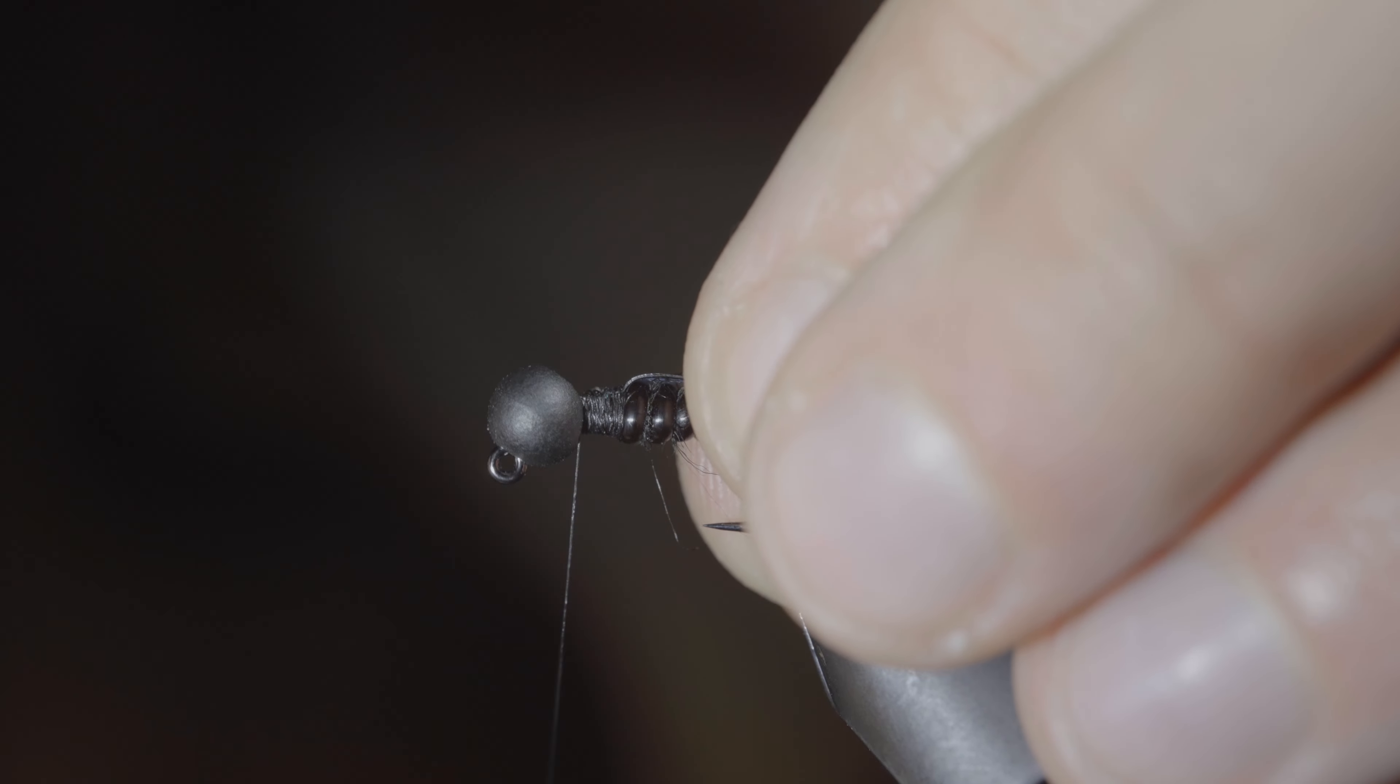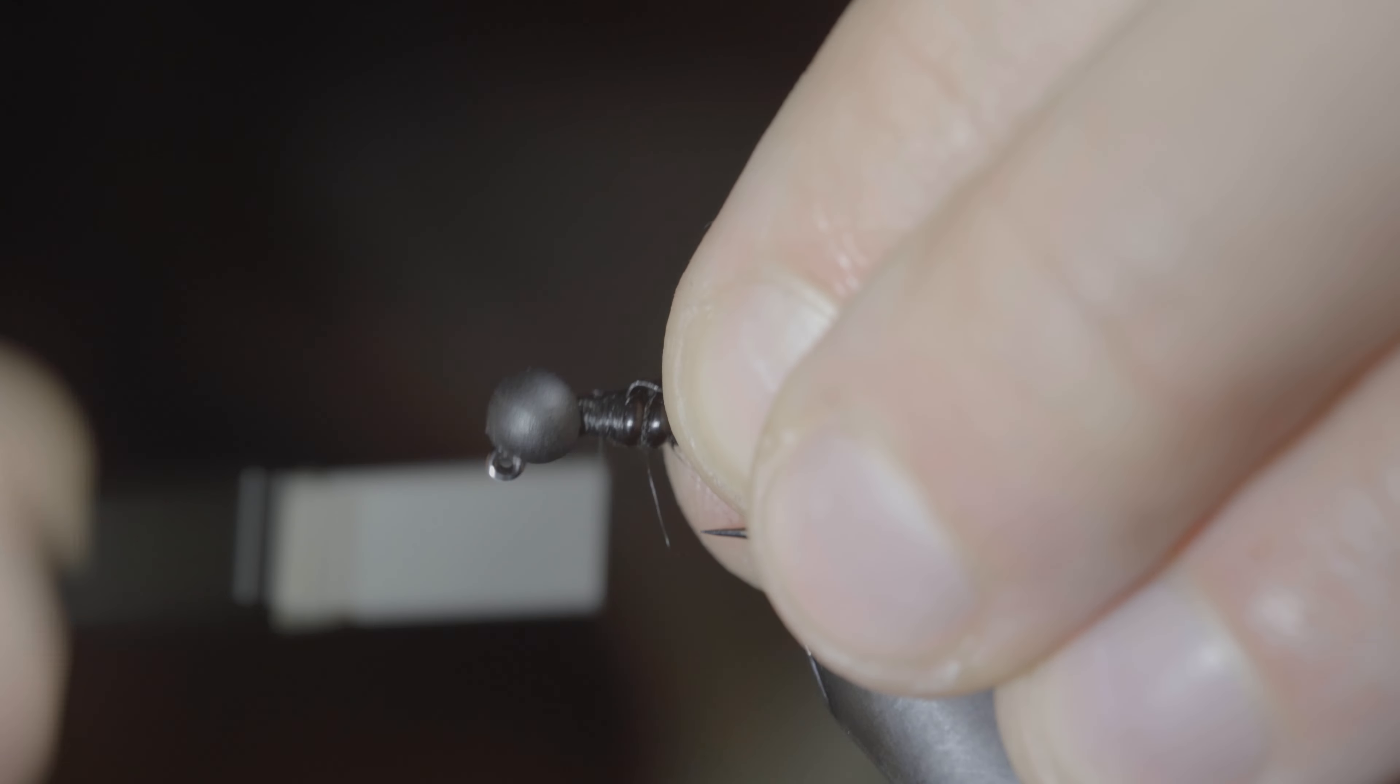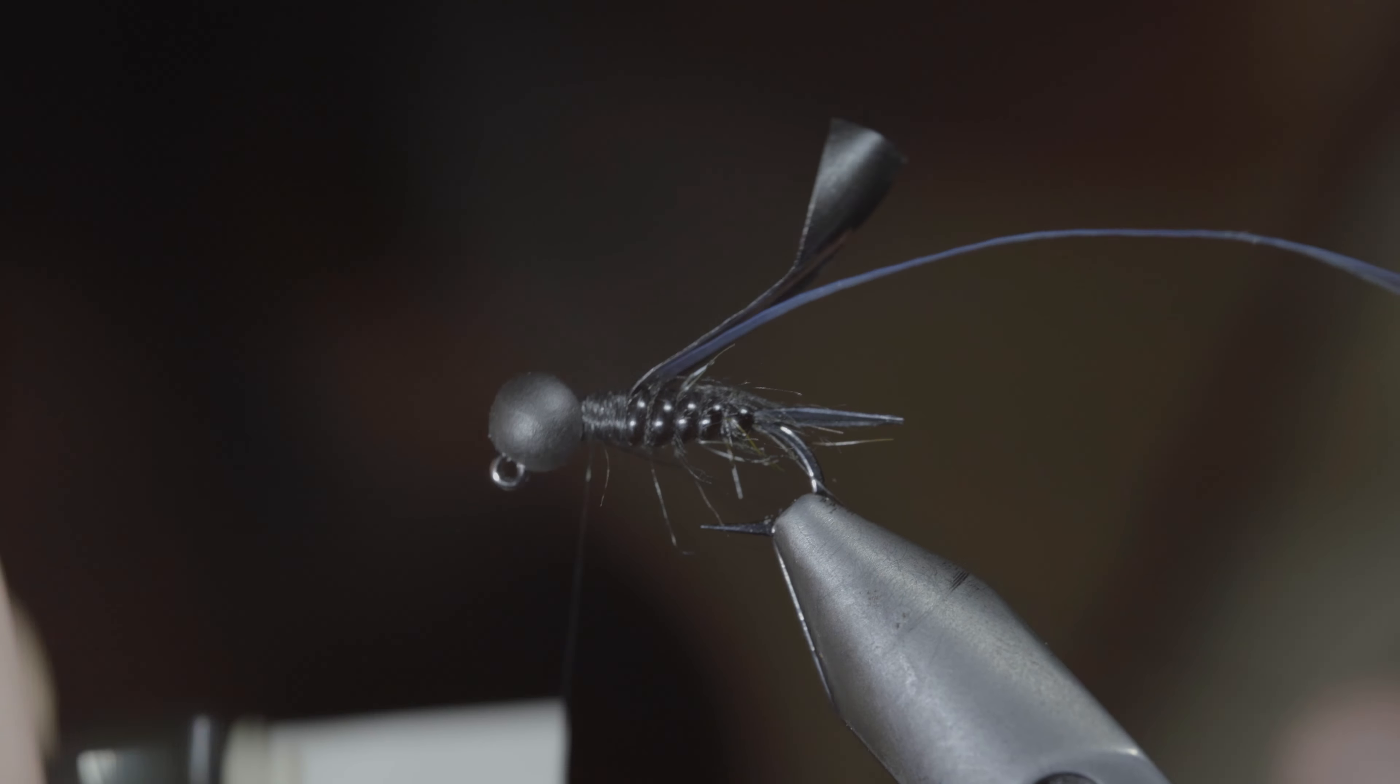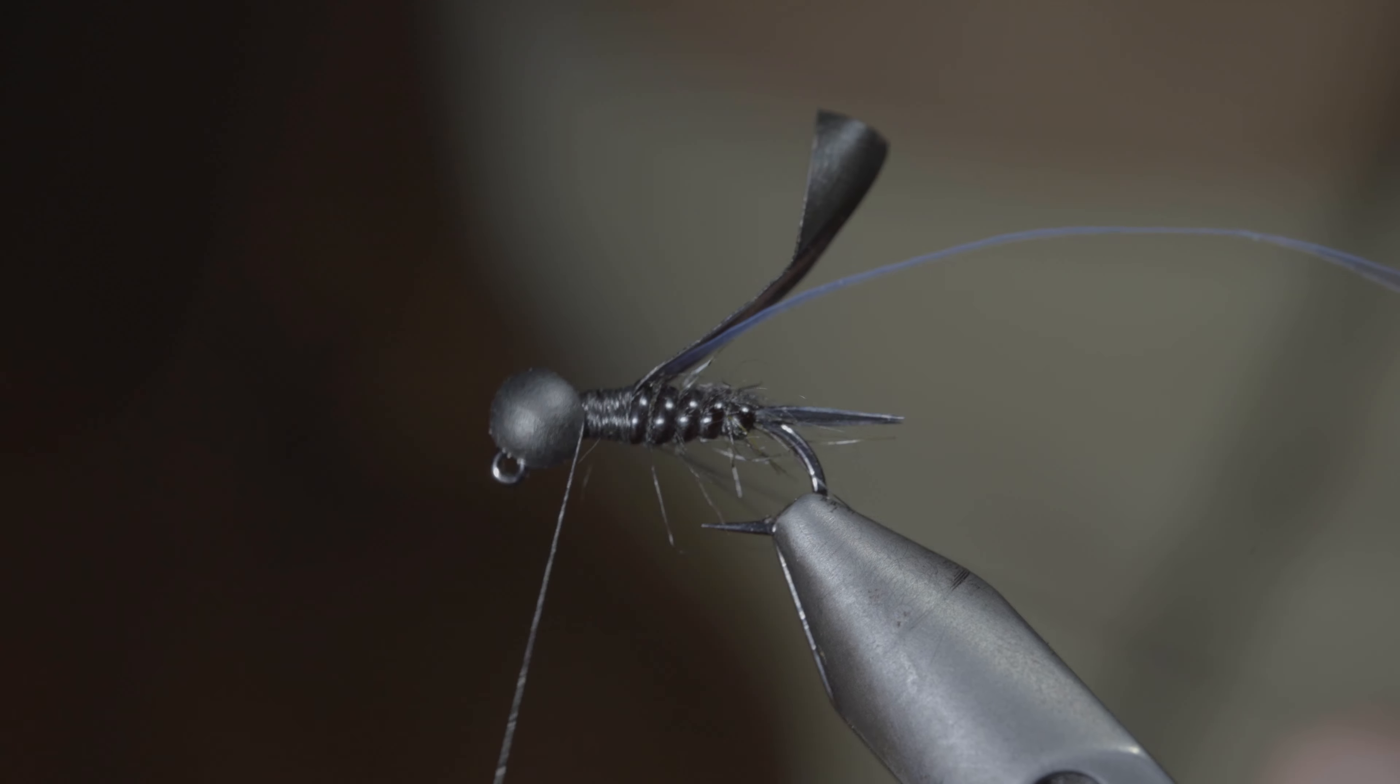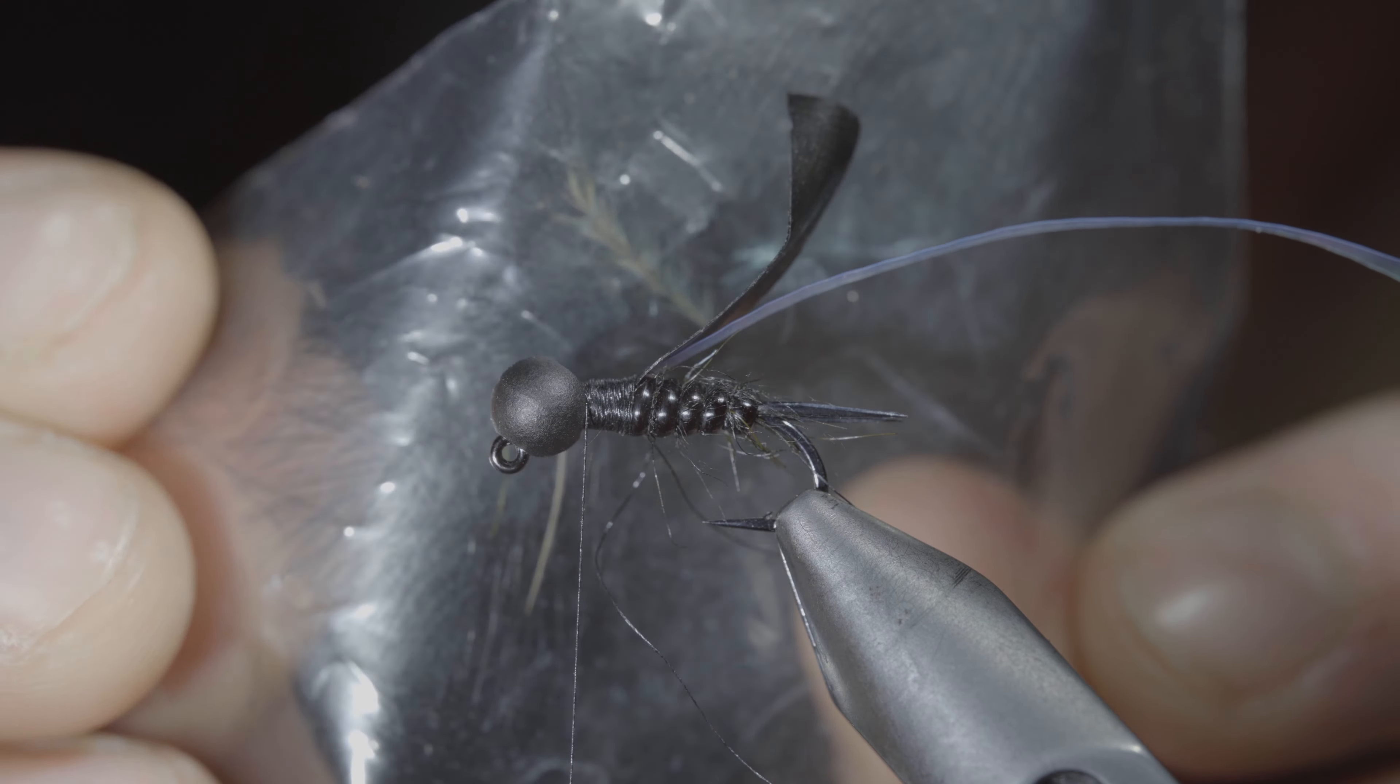Followed by some thin skin. We'll secure our thin skin in place, once again on top of our fly. We'll then create a dubbing loop and smooth out the head section of our fly to provide a flat surface for our following steps.